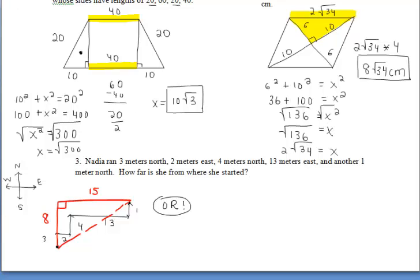Or instead of drawing out that diagram, what you can do is read the problem and figure out how far north she ran just from that. So your diagram won't be as complicated. So she ran 3 north, then 4 north, then 1 north. And then she ran 2 meters east and 13 east. So let's add up all of our norths. Those are the yellows.